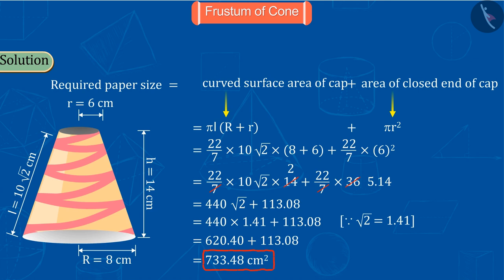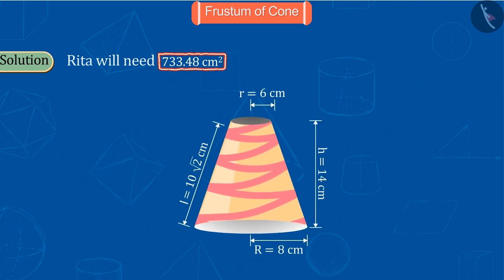So Rita would need 733.48 square centimeters of paper to make the hat. Let's see another example.